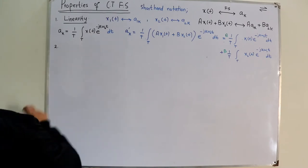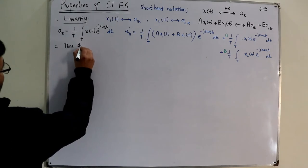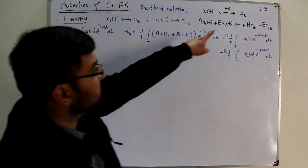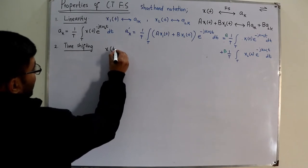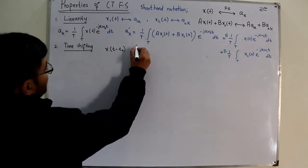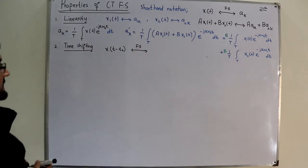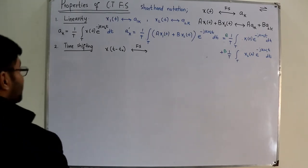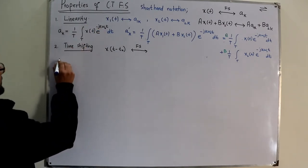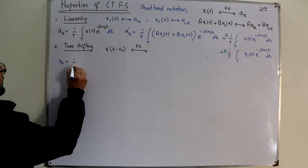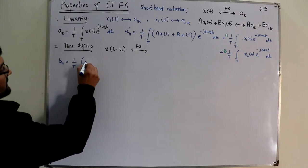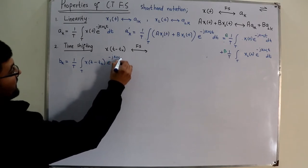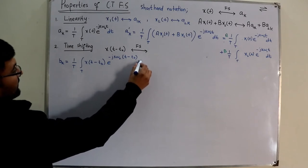The second property is time shifting. If X of T has Fourier coefficients AK, what would be the Fourier coefficients of X of T minus T-naught? We name the new coefficient BK. From the analysis equation, BK equals one over T, integrated over one period, of X of T minus T-naught multiplied by exponential of negative JK omega naught T, DT.